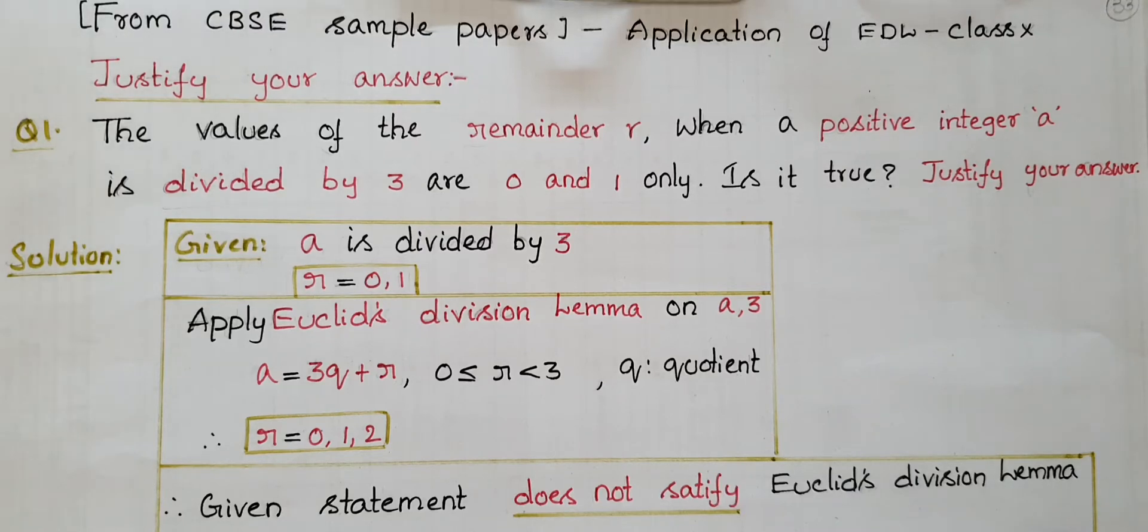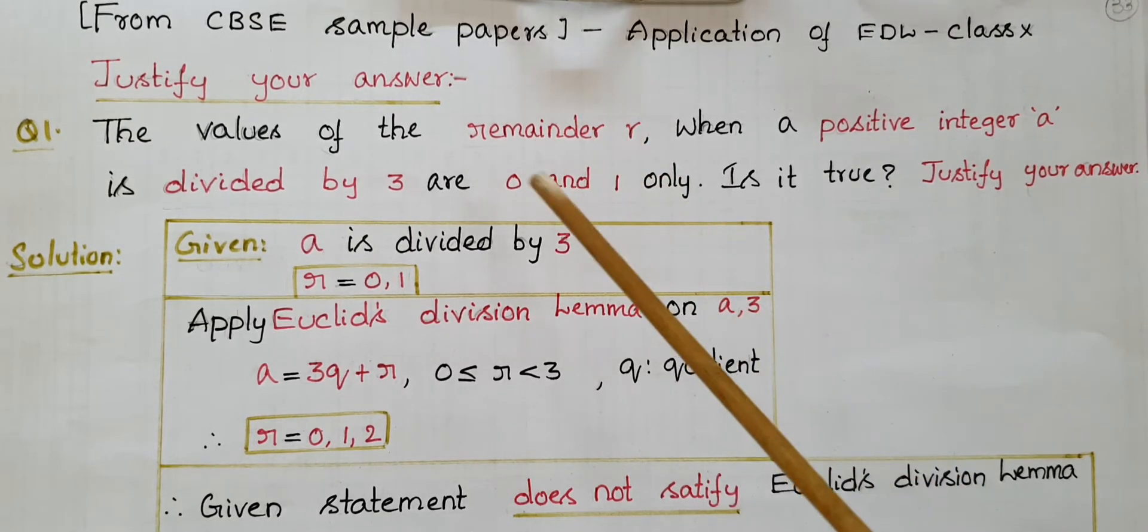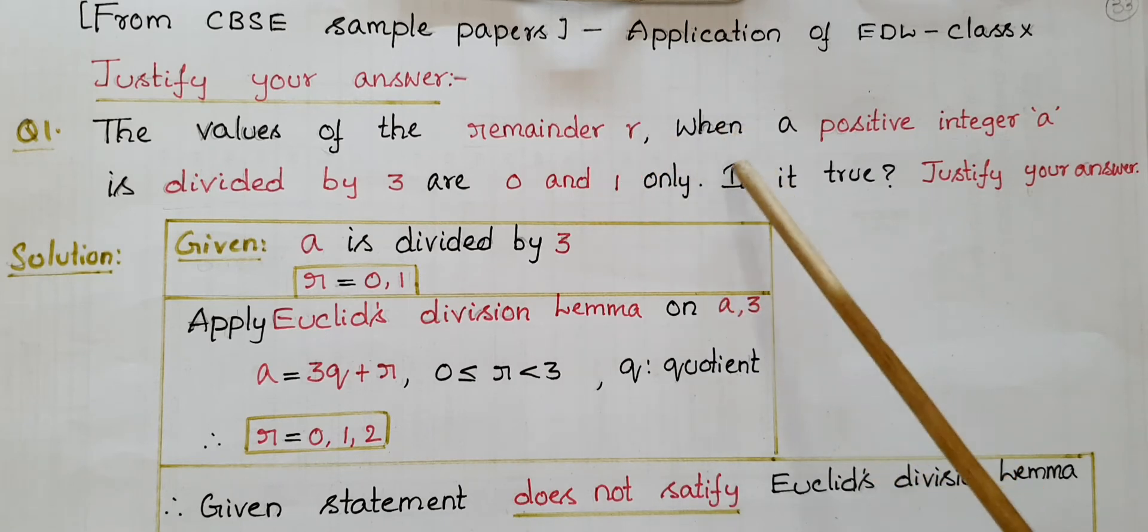Hello everyone, today I am going to tell the solution of a problem which is an application of Euclid's division lemma from real numbers class 10. The values of the remainder r when a positive integer a is divided by 3 are 0 and 1 only. Is it true? Justify your answer.